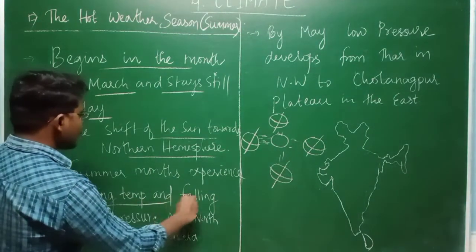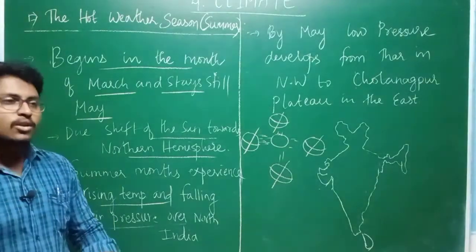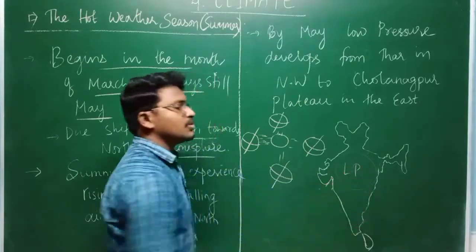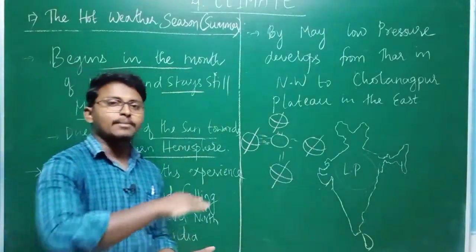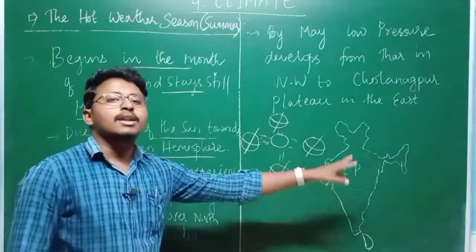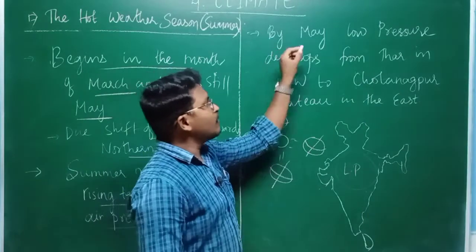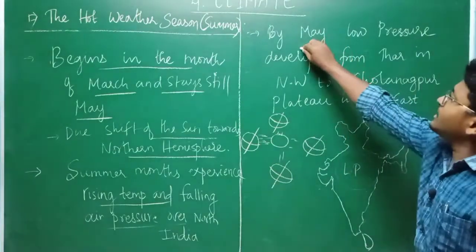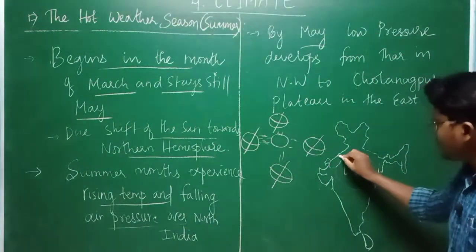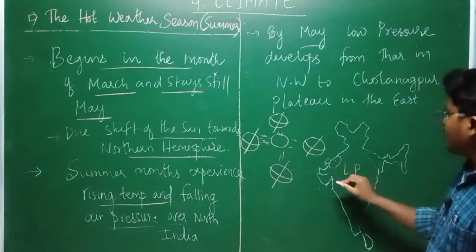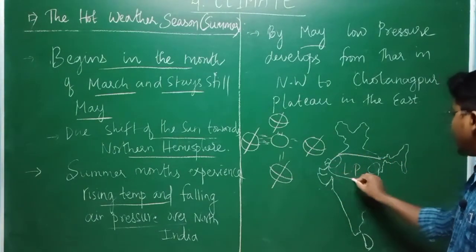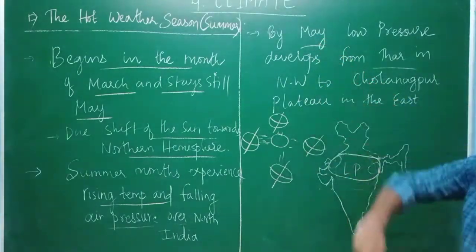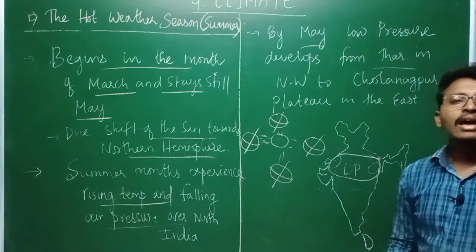The summer months experience rising temperature and falling air pressure in India. As temperatures are very high, a low pressure zone is created. By May, a low pressure area develops in the Thar desert in the western part — from western Rajasthan's Thar desert till the eastern part — and this entire region experiences a complete low pressure area in the month of May, because of the higher temperatures.